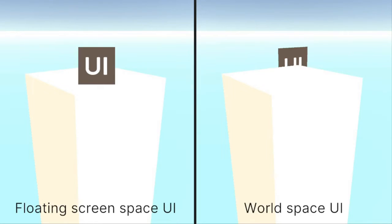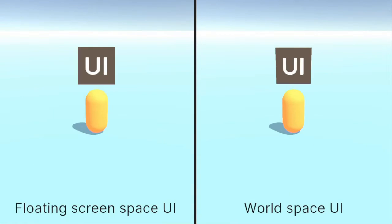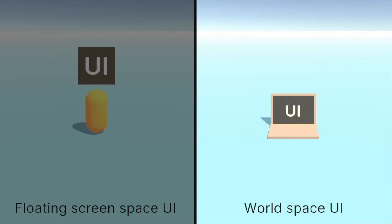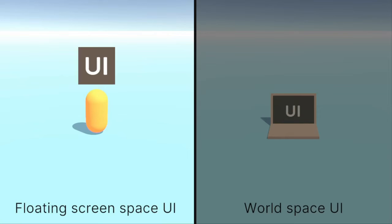So, we should think about which solution fits our project better. How would I decide? I think I would ask myself this question: should the UI feel like being part of the 3D scene? If, for example, I wanted to have a computer screen like this, I would definitely choose WorldSpaceUI. However, for some UI floating in mid-air, like the one above the capsule, I probably would choose FloatingScreenSpaceUI in most cases.